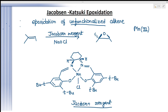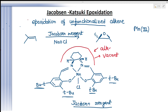You can see in this reagent there are four bulky groups present — one here, one here, one here, and one here. So the only side that is remaining is this side — you can see this side is the vacant side. So the alkene will attack only from this side. It cannot react from the lower surface; it will attack only from the upper surface. So the stereochemistry you get in this reaction is very important.